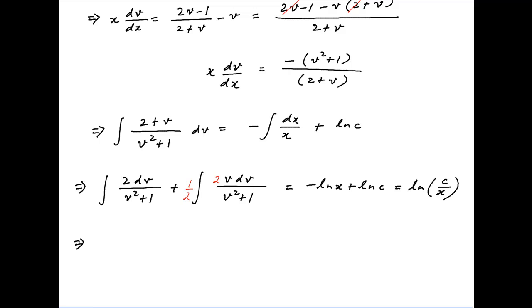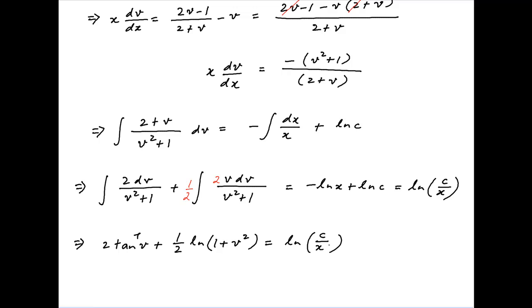This implies that 2 times tan inverse v plus half of ln of v squared plus 1 is equal to ln of c upon x.